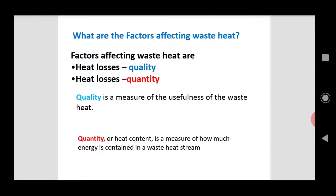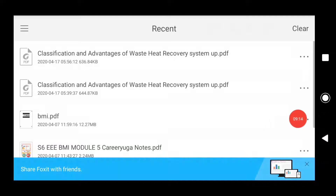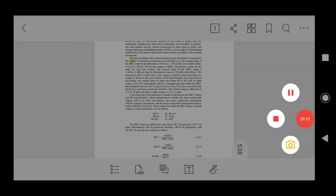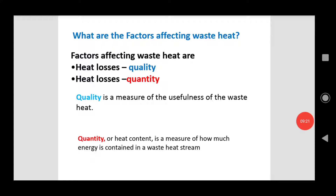Now we see what are the factors which affect the waste heat. Factors affecting waste heat are quality and quantity. Quality is the usefulness of waste heat — it is called the quality. Quantity is the heat content — it is a measure of how much energy is contained in the waste heat stream. You can also relate the waste heat to the exhaust heat temperature.